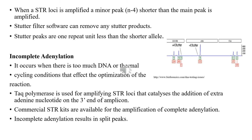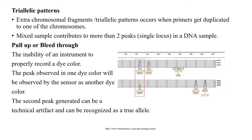Triallelic patterns or extra chromosomal fractions occur when a primer allele gets duplicated in one of the chromosomes. A mixture sample contributes to a DNA profile resulting in more than two peaks in a locus — this is called a mixture sample.